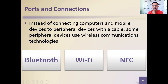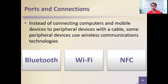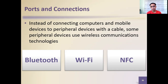Instead of using cables, some peripheral devices use wireless communication technologies. We have Bluetooth, Wi-Fi, NFC, infrared, and GPRS. With Bluetooth, you can share and receive files without internet. Wi-Fi requires an internet connection — hence the term wireless fidelity. NFC and infrared are older technologies less commonly used today.